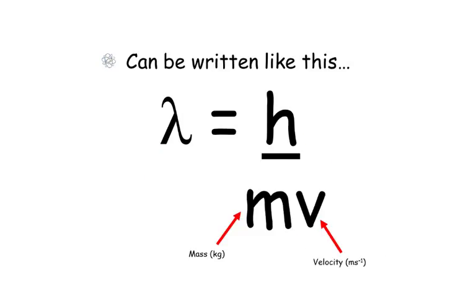It can also be written like this: I've just substituted momentum for mass times velocity. So the particle's wavelength is equal to Planck's constant divided by mass, which is in kilograms, times velocity, which is in meters per second.